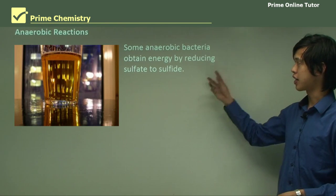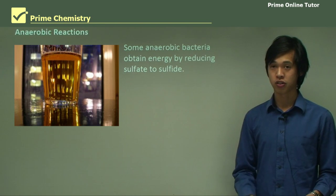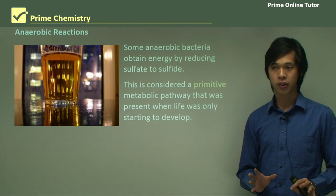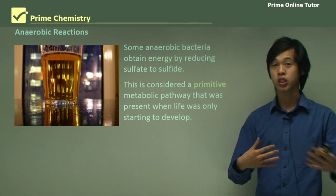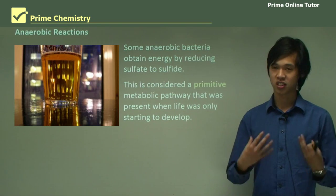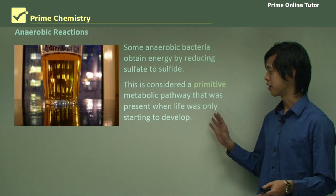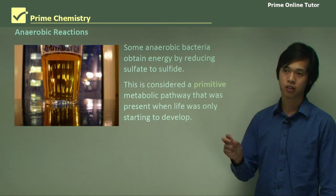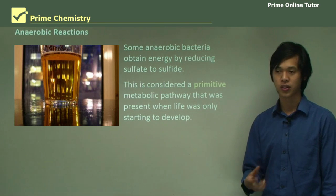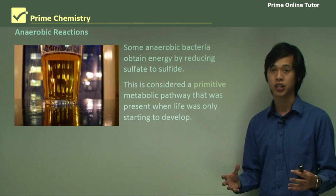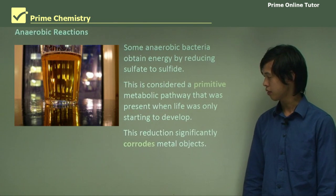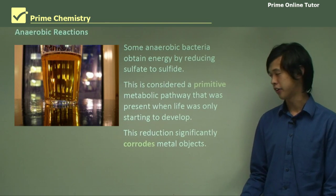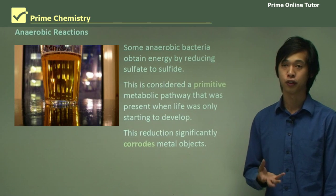Just as a recap, we know that some anaerobic bacteria obtain energy by reducing sulfate. We consider this quite a primitive pathway — primitive being older — rather than the more modern oxygen-consuming metabolic pathway. Organisms used it when oxygen was very low in concentration in the atmosphere. This reduction process significantly corrodes metal objects, particularly steels, because they're full of iron.